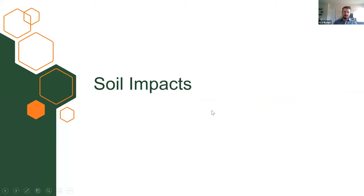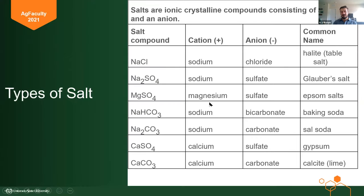Now let's jump into why we care and what salts do to the soil that makes it so hard for plants. We have many different types of salts: NaCl, sodium sulfate, magnesium sulfate, gypsum, calcite, Epsom salts, Glauber's salt, and all these different types. It matters what types of salt you have in your soil because it changes the way your soil behaves and the types of crops that can grow there.